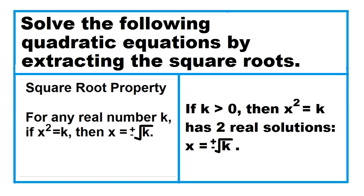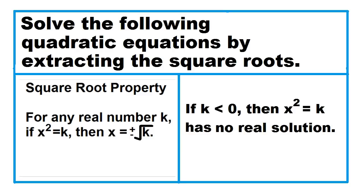If k is greater than 0, then x squared equals k has two real solutions: x equals positive square root of k, or x equals negative square root of k. If k equals 0, then x squared equals k has one real solution: x equals 0. If k is less than 0, then x squared equals k has no real solution.